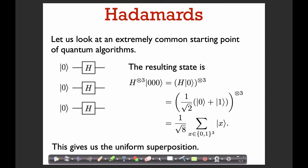Let's start by reviewing what the Hadamard does. Let's say we just have three qubits and we apply a Hadamard gate to each qubit. Everything is a tensor product here, so when you apply Hadamards like that, it's like applying the three-fold tensor product of the Hadamard gate to the |000⟩ state. We can write this equivalently as the three-fold tensor product of the Hadamard applied to |0⟩. We know what the Hadamard does to |0⟩: it maps it to (|0⟩ + |1⟩) times one over root two.